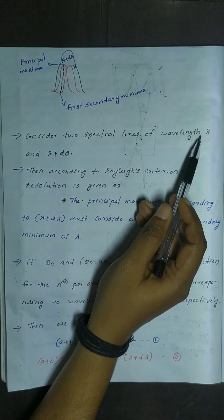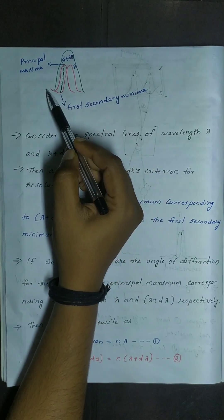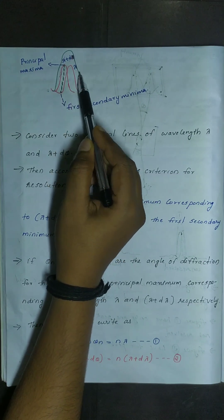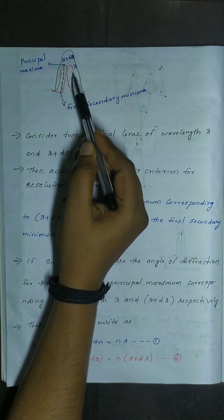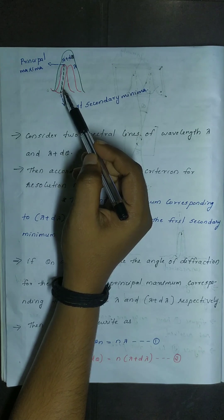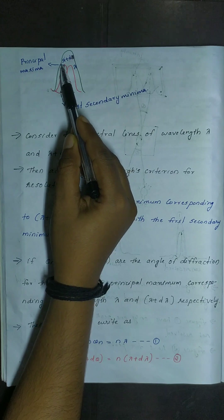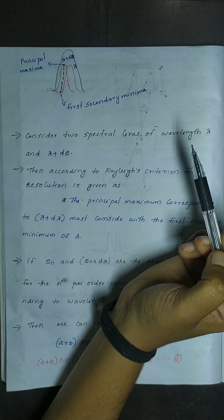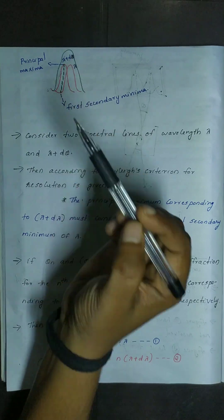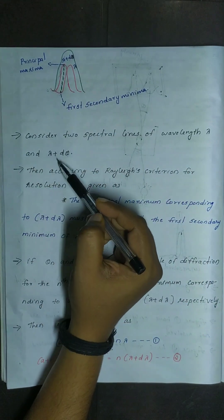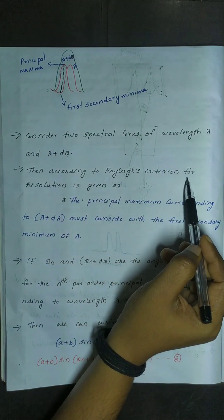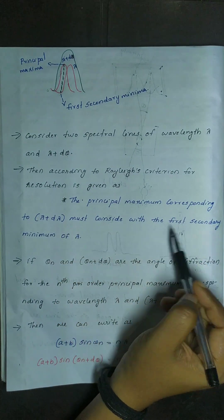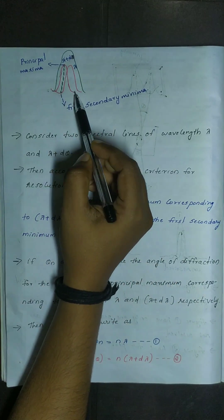Consider two spectral lines of wavelength lambda and lambda plus d lambda. According to Rayleigh's criterion, the resolution condition is given as: the principal maximum corresponding to lambda plus d lambda must coincide with the first secondary minimum of lambda.